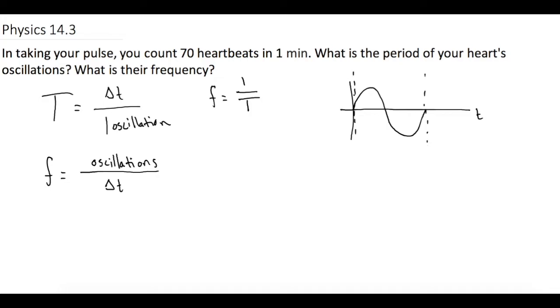So they tell us our oscillations in this case are our heartbeats, which is 70 heartbeats. And then they tell us the time period is one minute, and I'm going to put that in the standard units of 60 seconds.